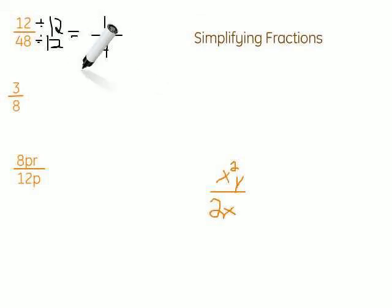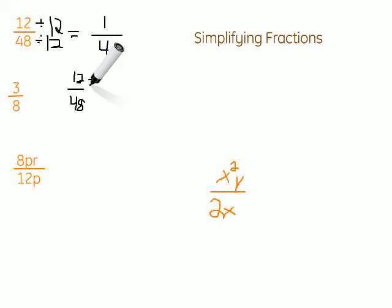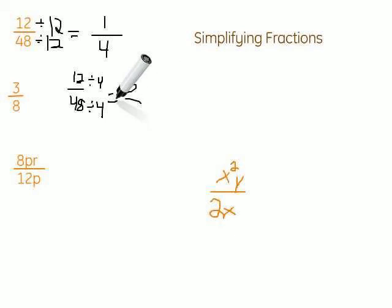We can also do this by dividing several times. What would happen if we divided by 4 rather than 12? We have 12 over 48 — divide top and bottom by 4. 12 divided by 4 is 3, and 48 divided by 4 is 12.